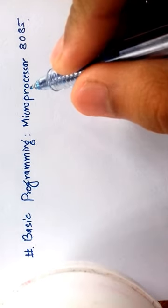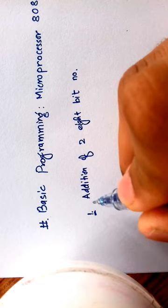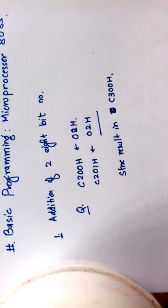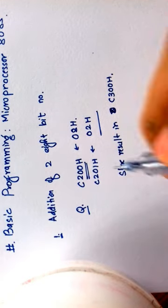Welcome to the basic programming video on microprocessor 8085. In this video we'll discuss the addition of two 8-bit numbers. In this program, we add the content of this memory address and the content of this memory address.